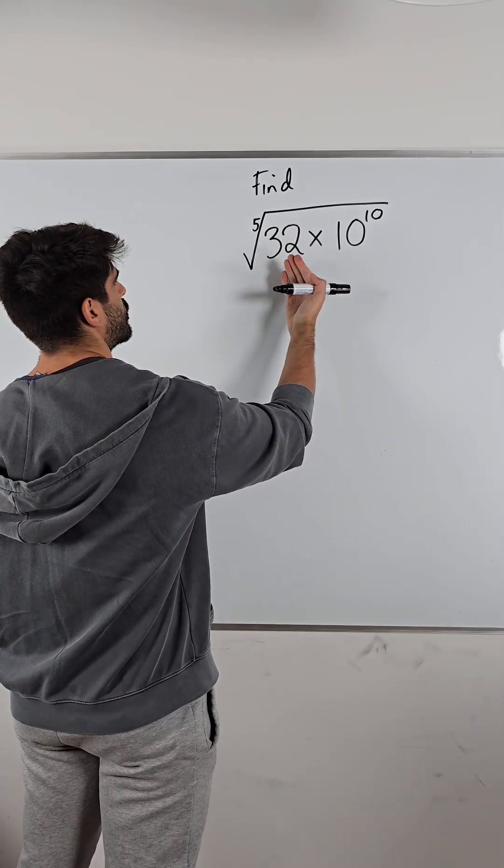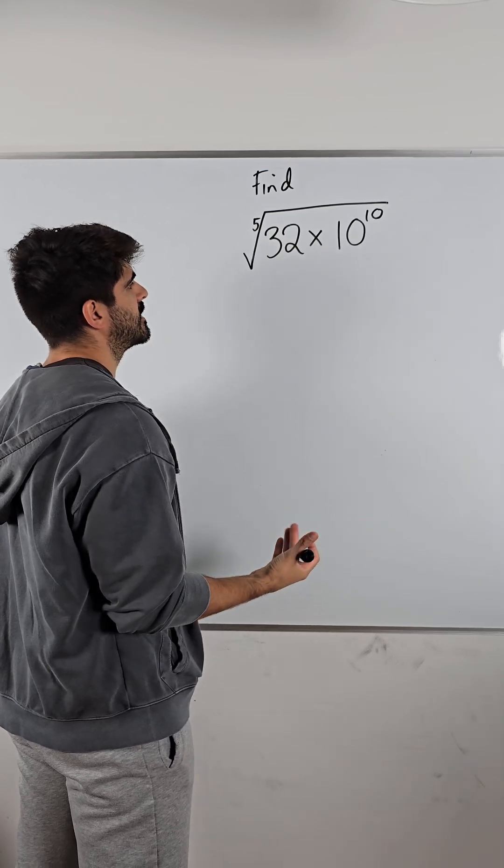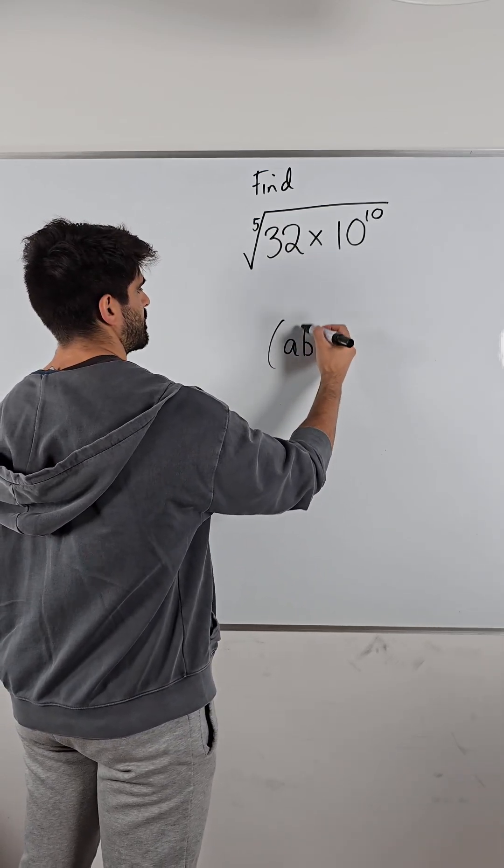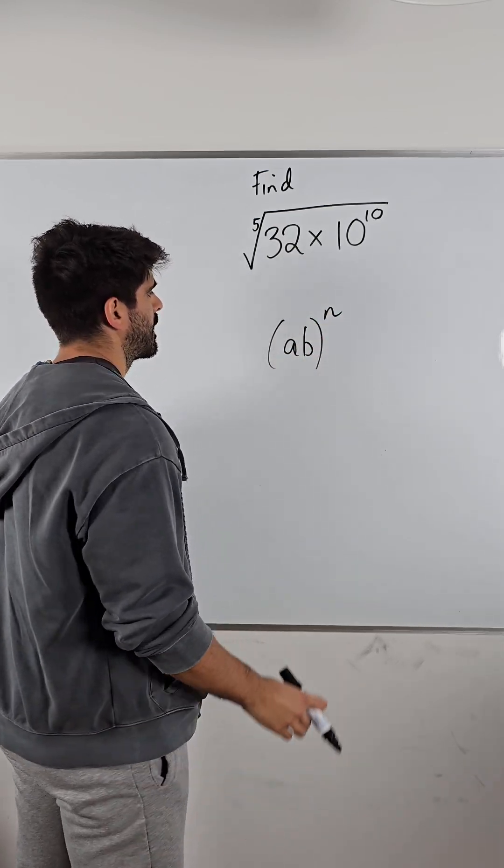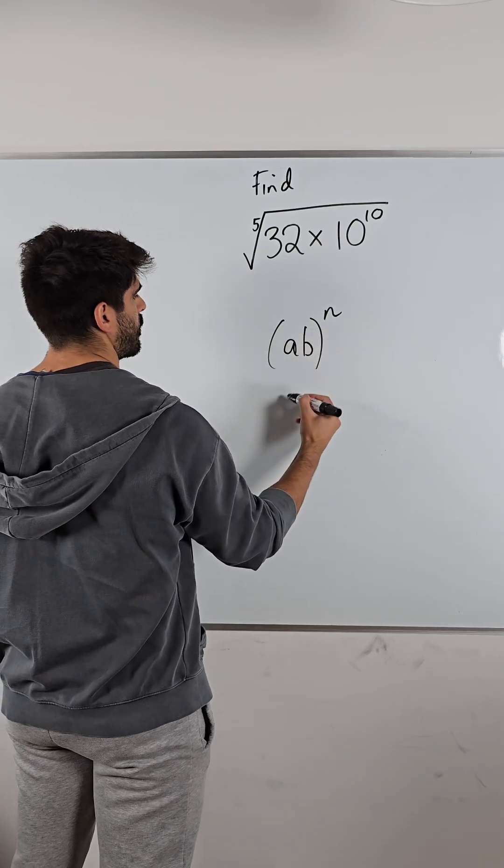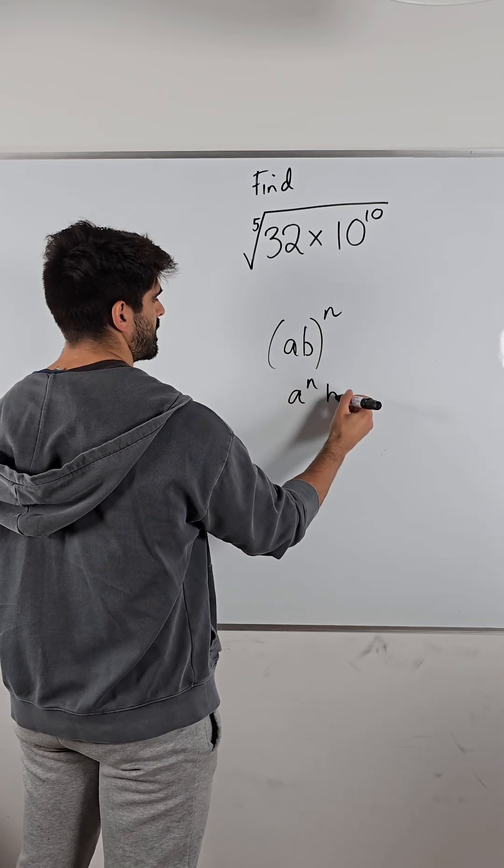Now, we want the fifth root of 32 times 10 to the power of 10. Using our index rules, just to explain what we're doing here. If I have a product raised to a power, we do A to the power of N, B to the power of N.